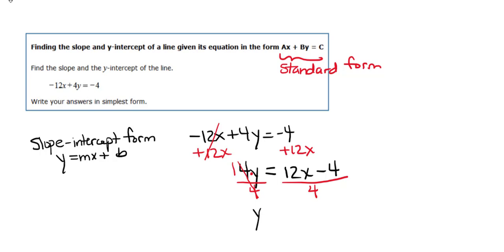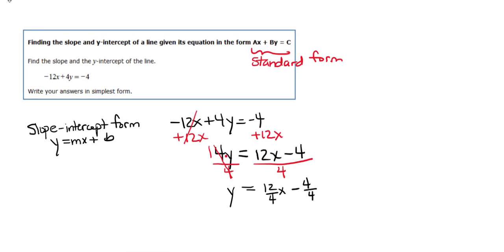And then on the right, you need to make sure and divide both the 12 and the negative 4 by 4. A lot of times people forget to divide one of them. So we're going to get y equals 12 divided by 4 is 3. So 3x minus 4 over 4 is 1.